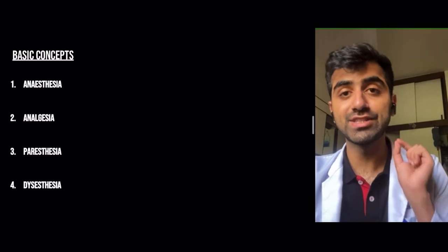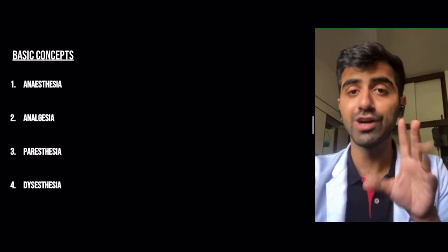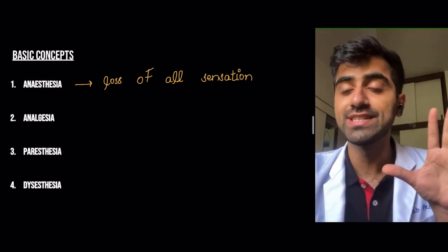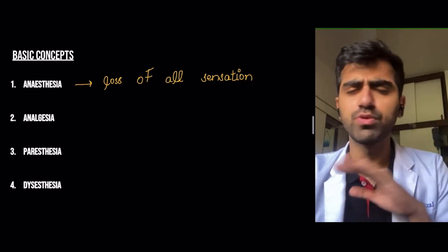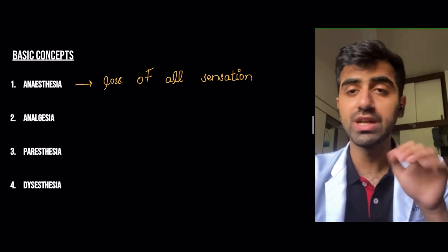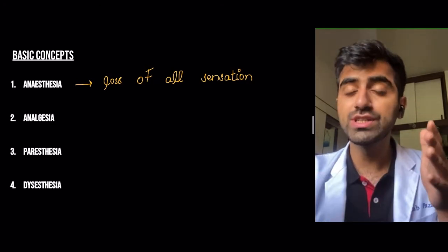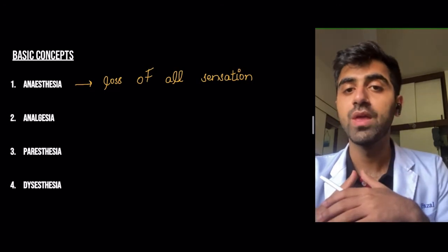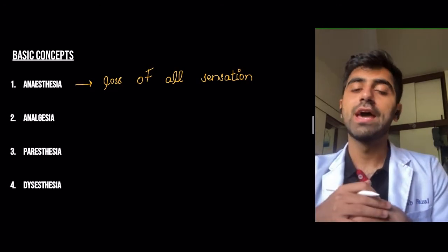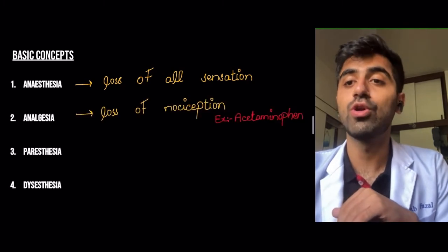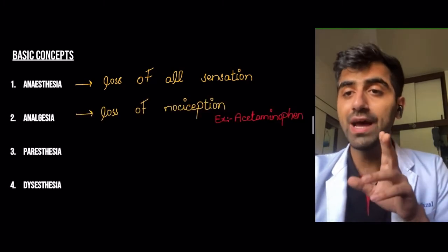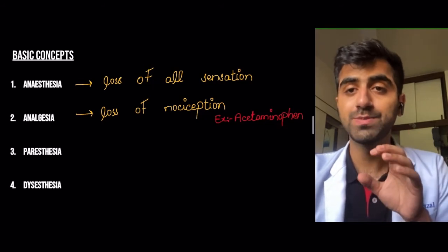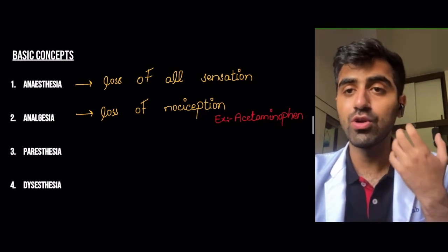Before we start, let's look at some commonly used terms. Anesthesia is the loss of all sensation altogether, which includes vibration, proprioception, temperature, crude touch, light touch, fine touch, and two-point discrimination — any sensation you can think of is gone. Analgesia means the loss of nociception or the loss of pain. An example is acetaminophen, used to relieve headaches because you want analgesia.